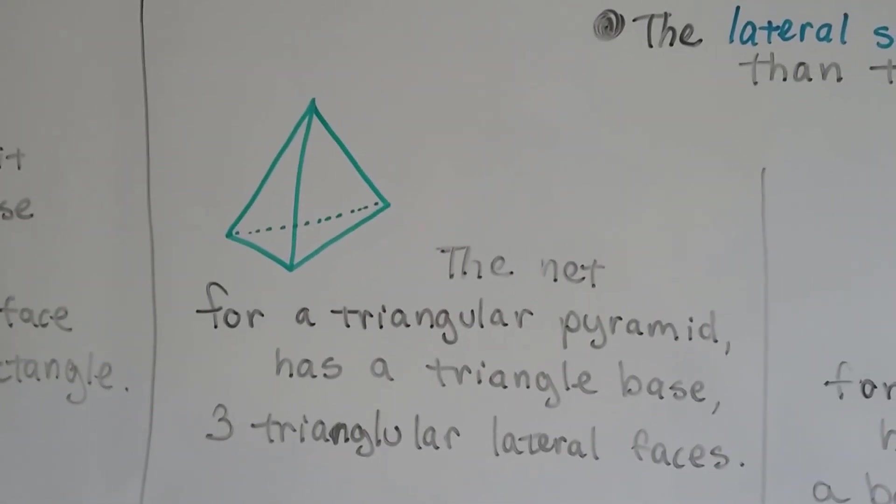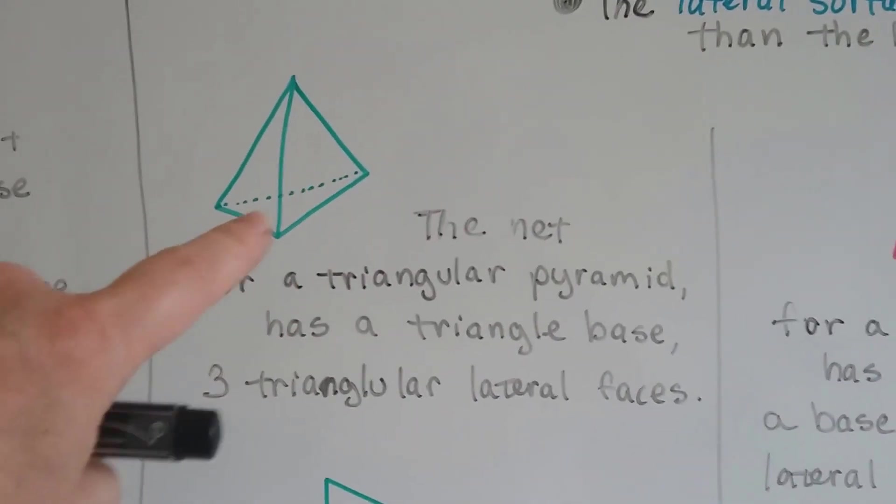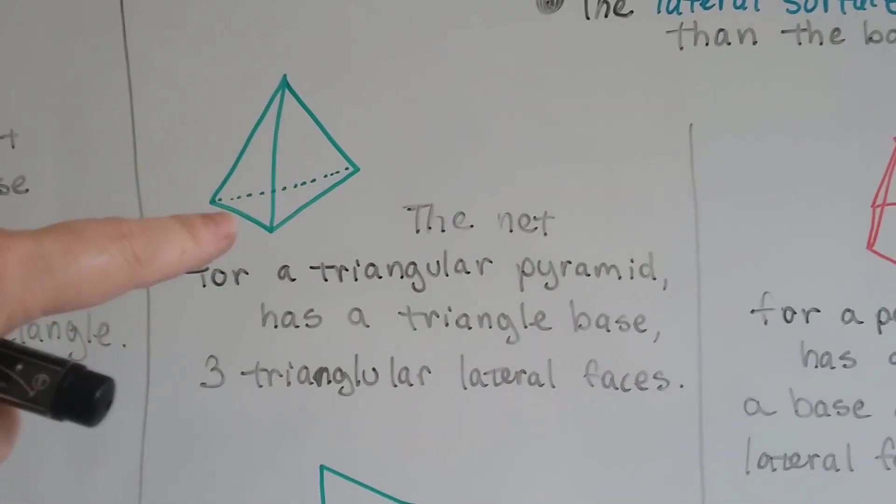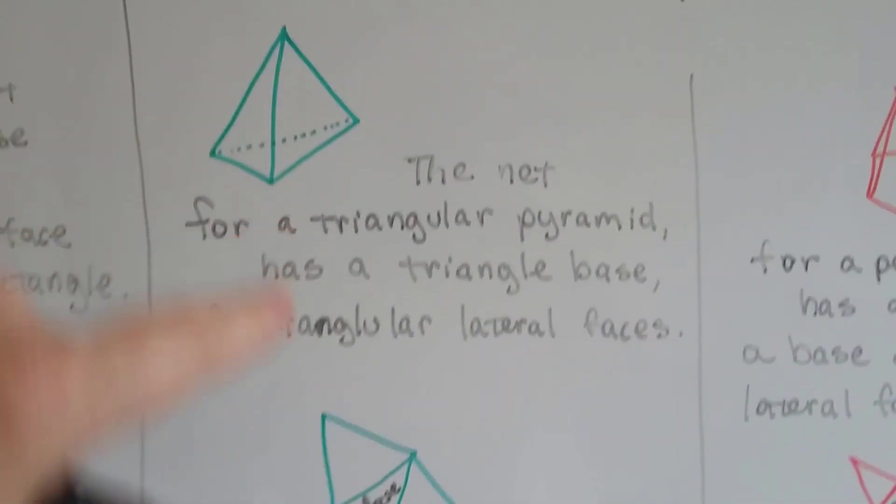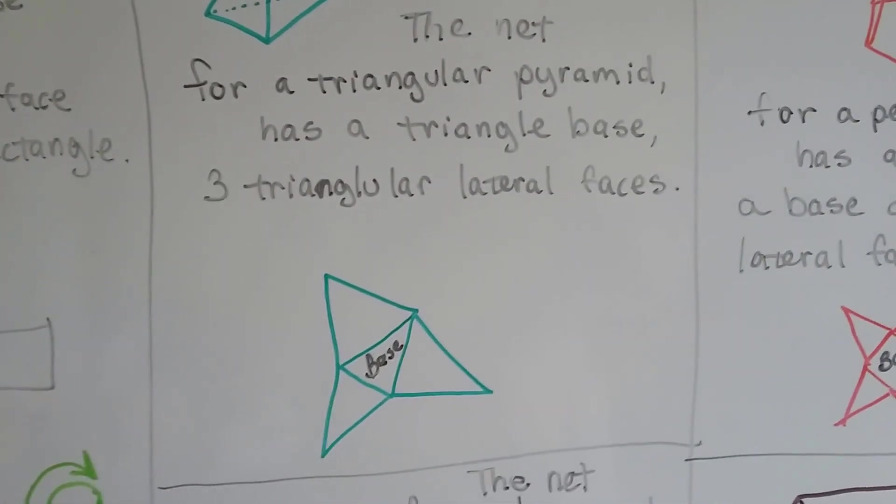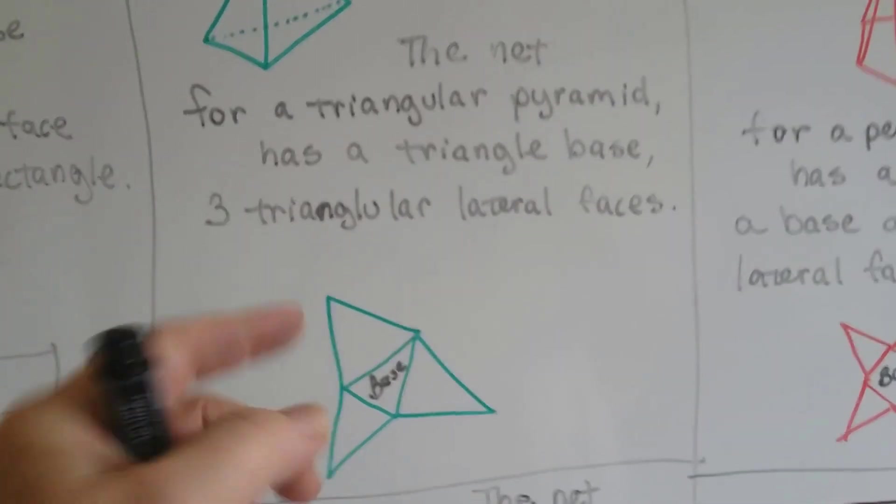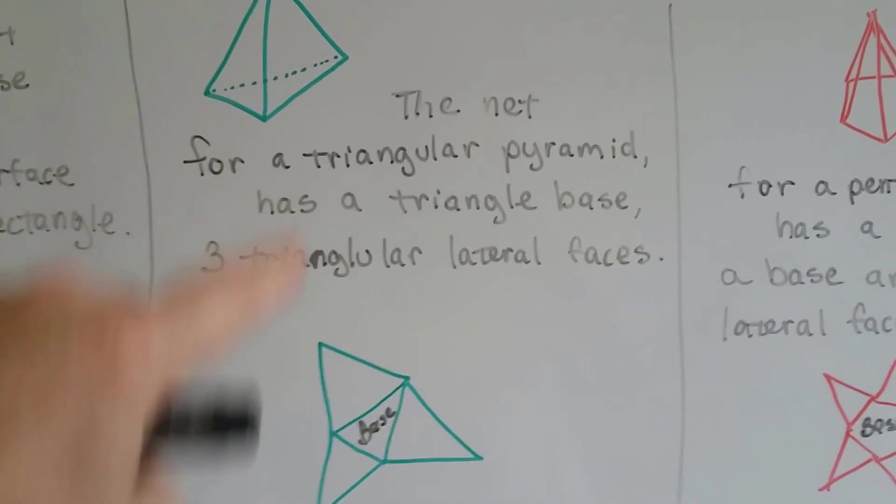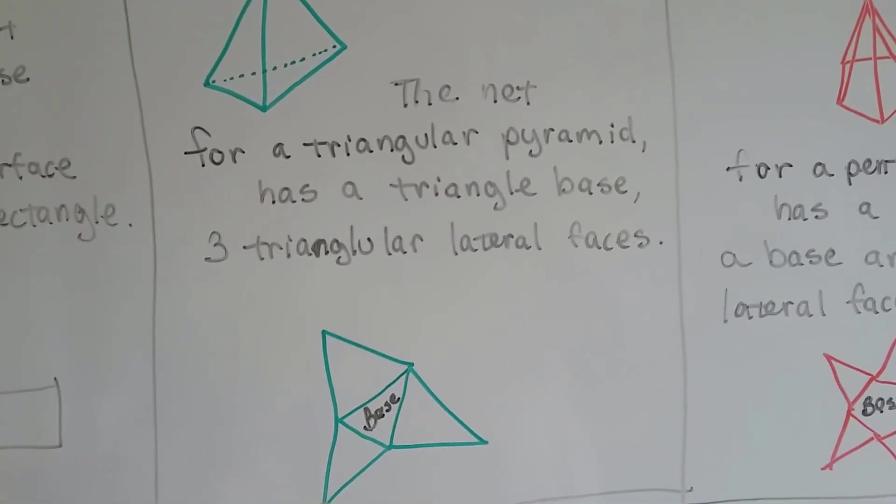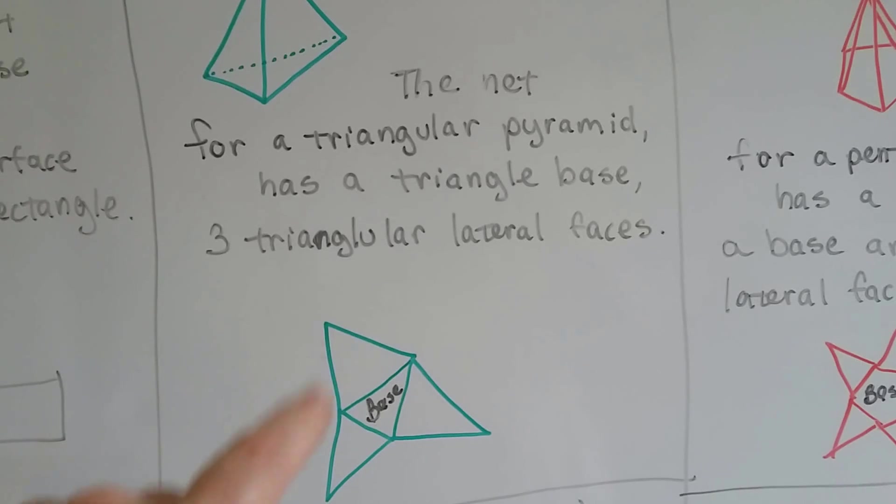The net for a triangular pyramid has a triangle base that it's sitting on. And then it's got three triangular lateral faces. And when you open it up, it looks like this. And when you fold it back up again, the apex, where it meets at the top, is the tips right here, these vertex tips right here.